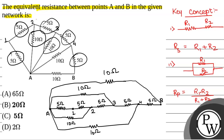So, we will start simplifying between points A and 2. These two 5 ohm resistors are in series, giving 10 ohm, and then 10 and 10 are in parallel. So 10 and 10 in parallel will give 5 ohm. So the equivalent circuit between A and 2 has only a 5 ohm resistor. Between 2 and 3 there is again a 5 ohm resistor.